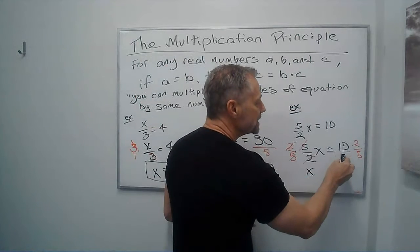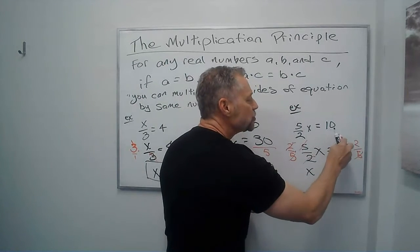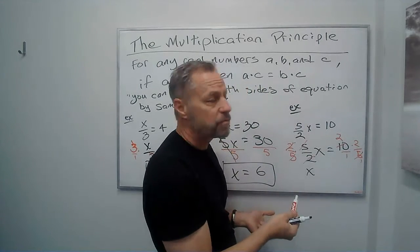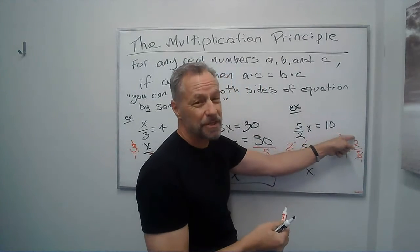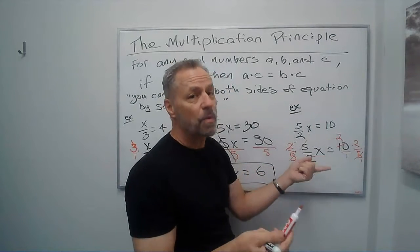Now here, again, you can think that is 10 over 1 if that helps. 5 goes into 10 twice. Now I just have 1s on the bottom. 5 goes into 5 1s. Now I have 2 times 2 on the top, which is 4. 1 times 1 on the bottom is 1. 4 divided by 1 is just 4.